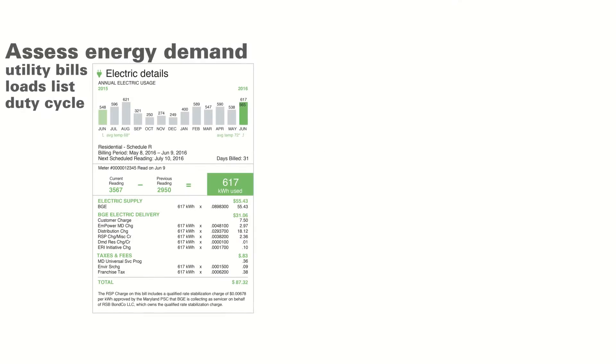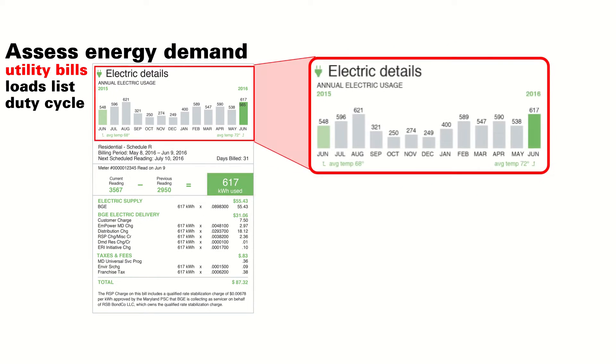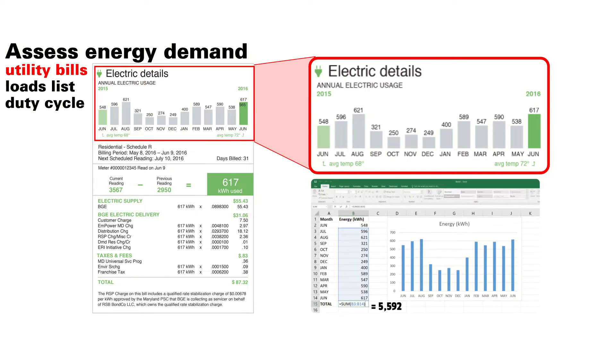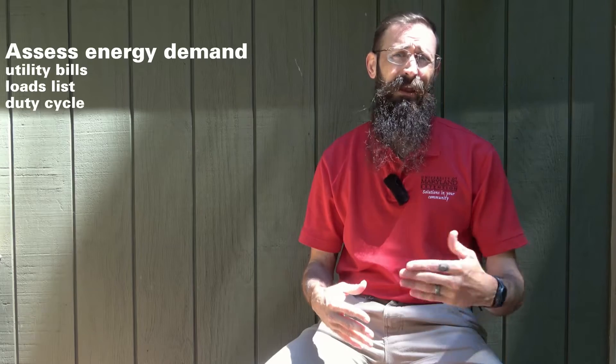Now that we've covered battery technology basics, we'll consider the information needed to size the battery bank for a solar electric system. We'll briefly review how to determine power and energy requirements — please review our previous video on load assessments for more information. The simplest method for grid-tied systems is to look at your electric utility bill to see how many kilowatt hours are used monthly. In this example, 617 kilowatt hours were used in the current billing period, and adding up energy over the last 12 months results in an annual energy use of 5,592 kilowatt hours.